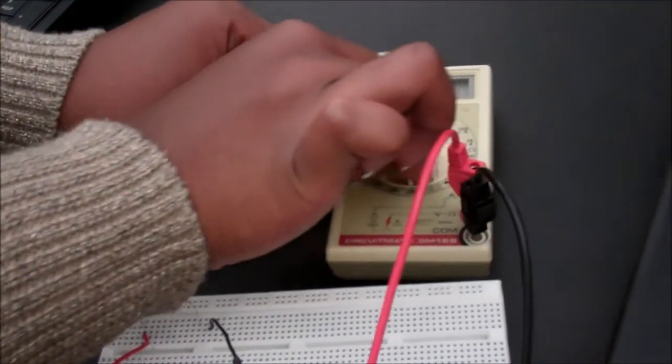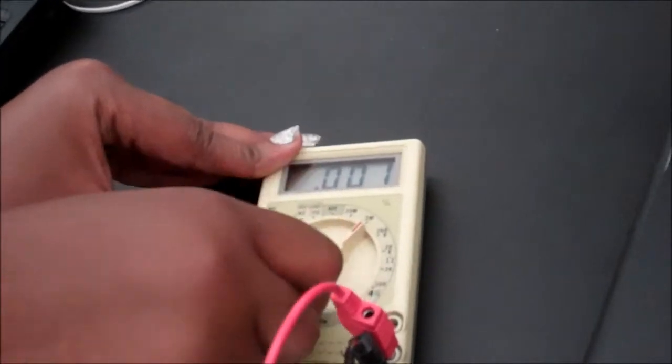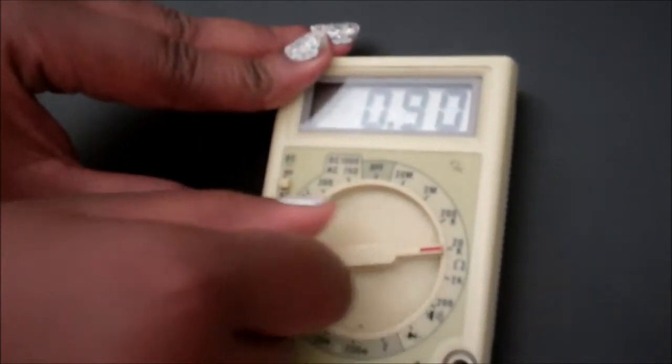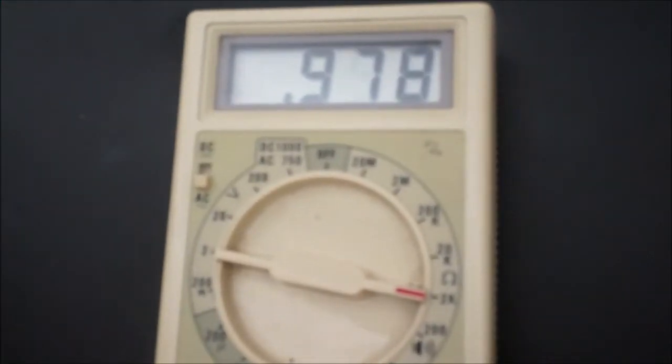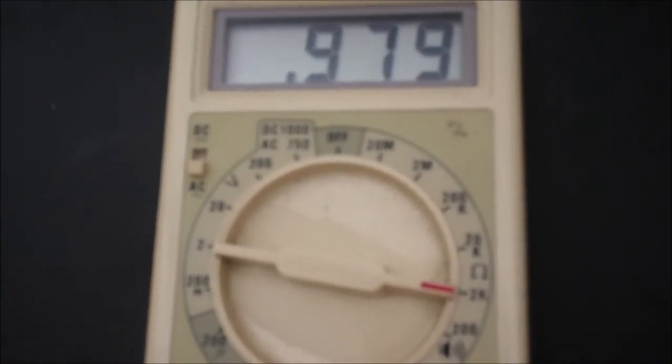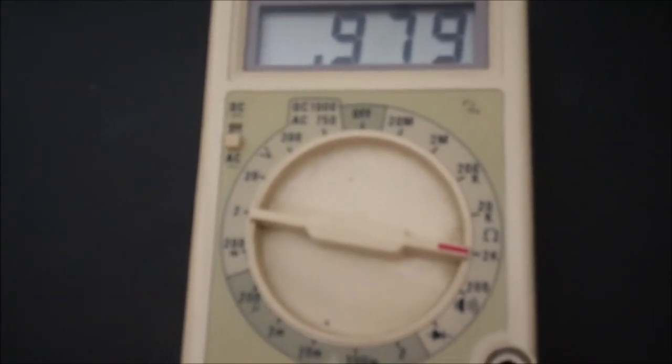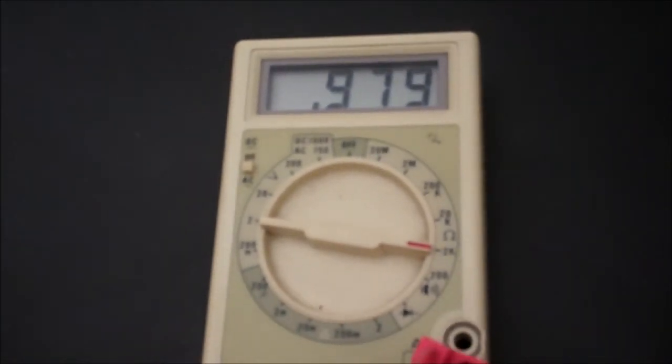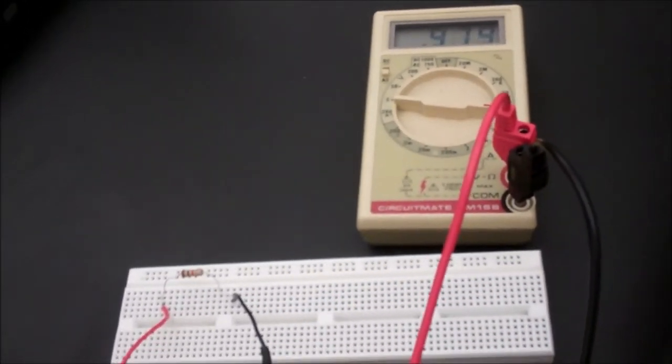Be sure you're using the proper setting on your multimeter. The band value should give you a hint for what range to use. Remember that you don't actually need to be running electricity through the resistor to measure its resistance.